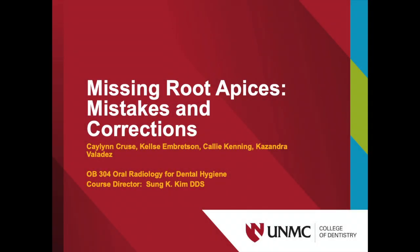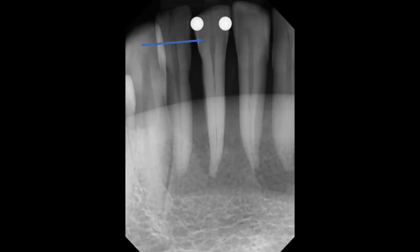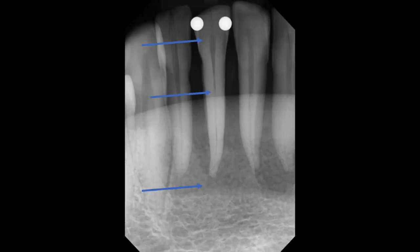Taking maxillary and mandibular periapical radiographs are important to capture the entire length of a tooth, including the crown, root, and bone. A good periapical radiograph will show the full length of the tooth as well as 2 mm of periapical bone surrounding the apex.